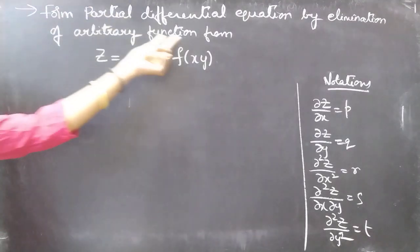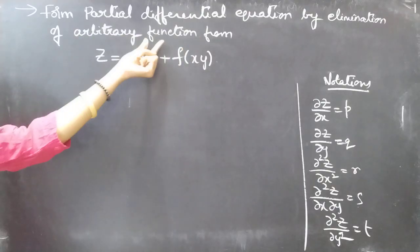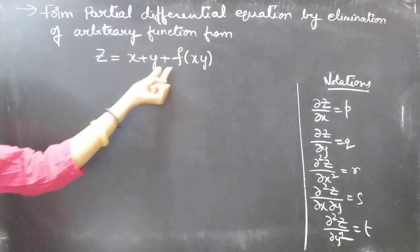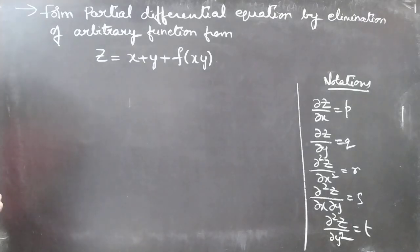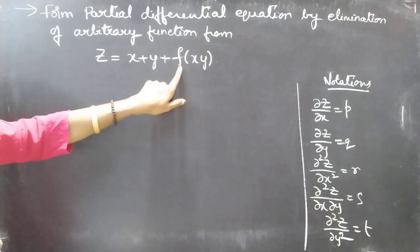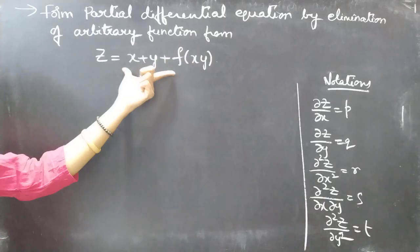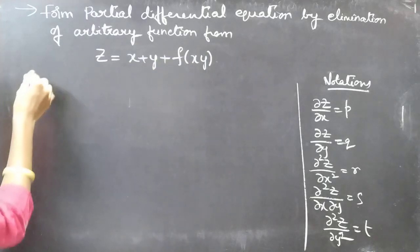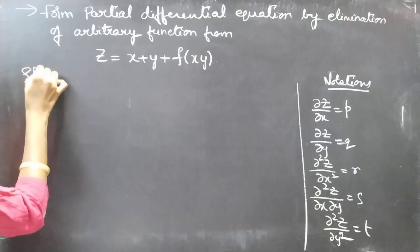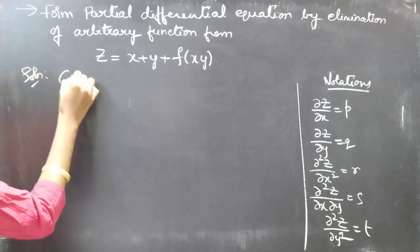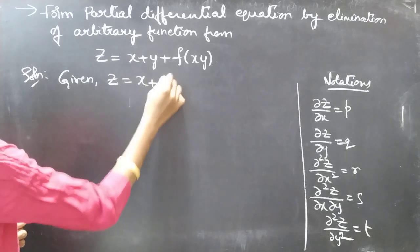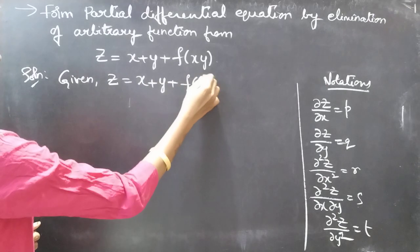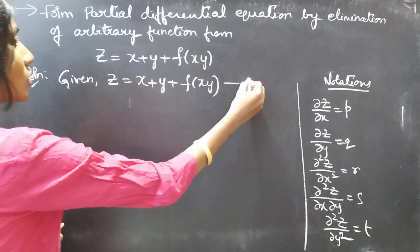Problem: form a partial differential equation by elimination of arbitrary function from z = x + y + f(xy). So here we are given an equation and we are asked to form a partial differential equation by eliminating the arbitrary function f from this equation. Given z = x + y + f(xy). Consider it as equation number 1.